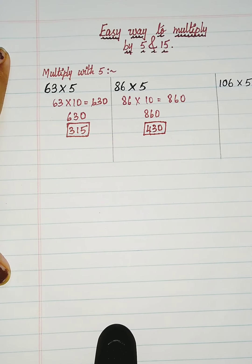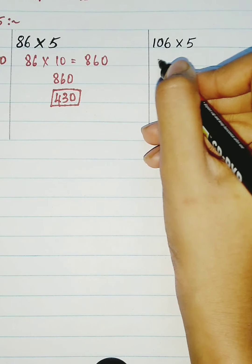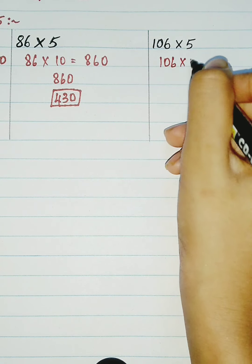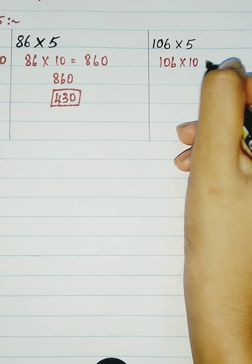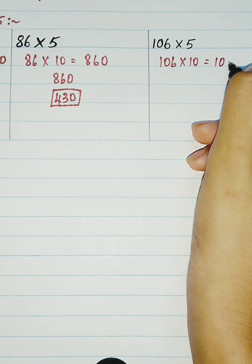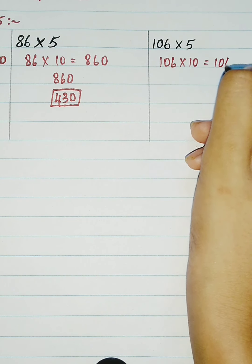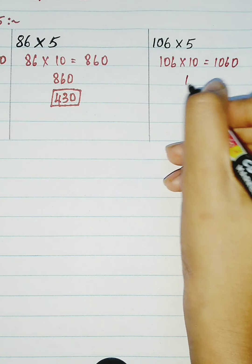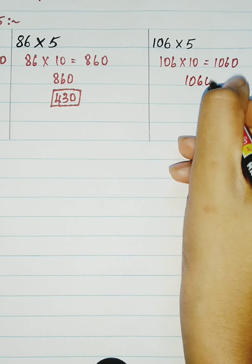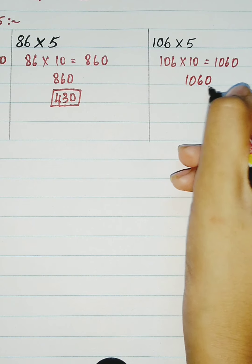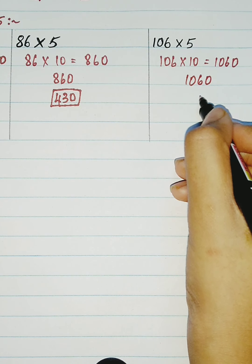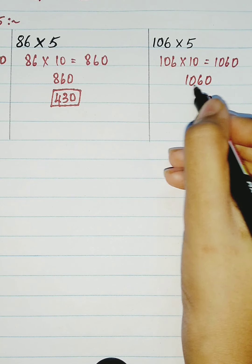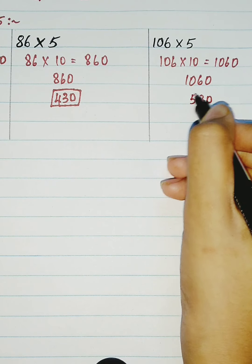Now the same way for the third one: 106 into 10 is equal to 1060. Half of 1060 is 530. So 530 is our answer.